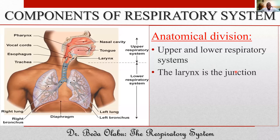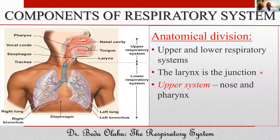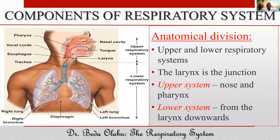The larynx is the junction between those two divisions of the respiratory system. With the larynx being the junction, when you talk of the upper respiratory tree, we're referring to primarily the pharynx and the nasal cavity. And when you talk of the lower respiratory tree, we start from the larynx downwards — the larynx, trachea, bronchi, bronchioles, and the whole lung — as part of the lower respiratory tree.